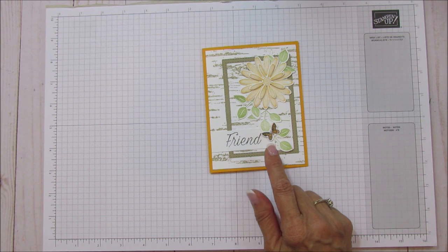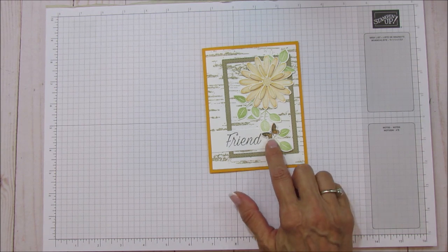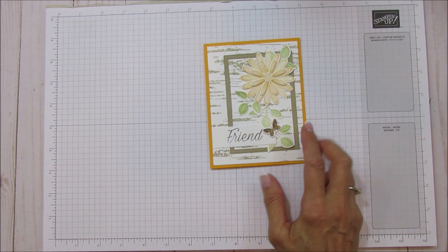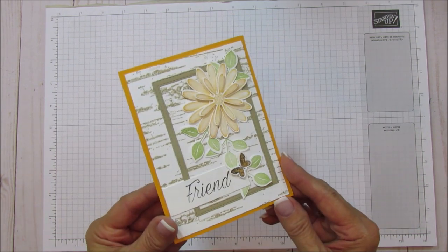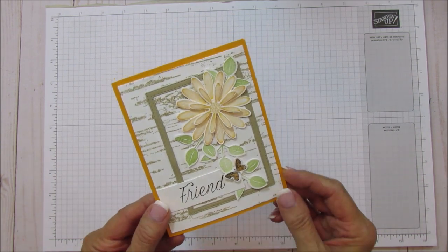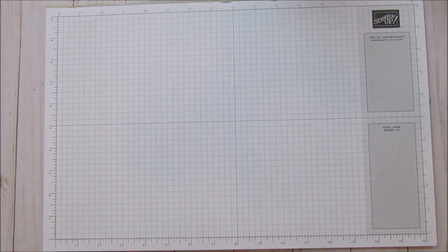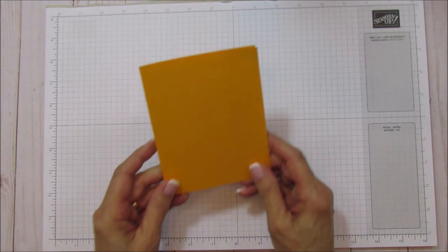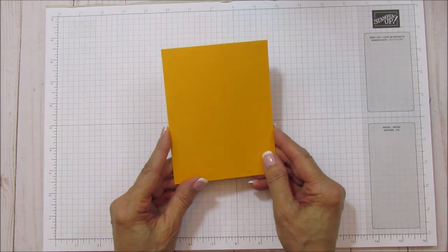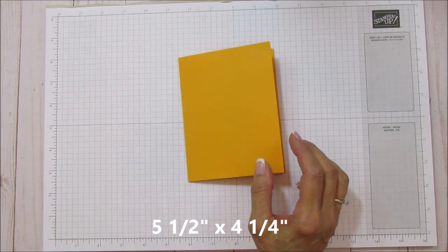I'm also going to use my Butterfly Gala stamp set just for this little butterfly but if you have a butterfly punch or anything like that you can use that also. Alright, so let's get started. I am using Mango Melody today. This is our card base which is 5.5 x 4.25.